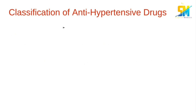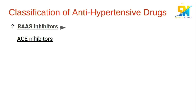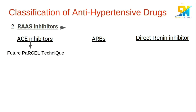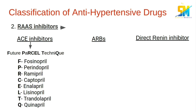The second category is the RAS inhibitors, which include the ACE inhibitors, angiotensin receptor blockers, and direct renin inhibitors. We can remember the ACE inhibitors by the mnemonic 'future partial technique': fosinopril, perindopril, ramipril, captopril, enalapril, lisinopril, trandolapril, and quinapril.